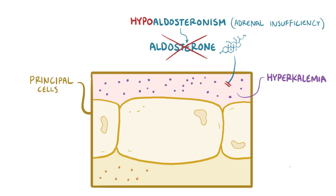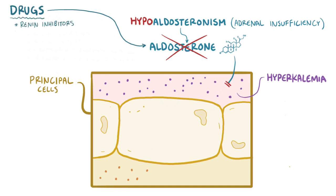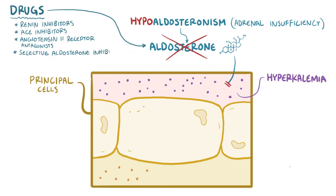Along the same lines, drugs that reduce the effect of aldosterone can also cause hyperkalemia. These include renin inhibitors, ACE inhibitors, angiotensin-2 receptor antagonists, selective aldosterone blockers, and potassium-sparing diuretics.